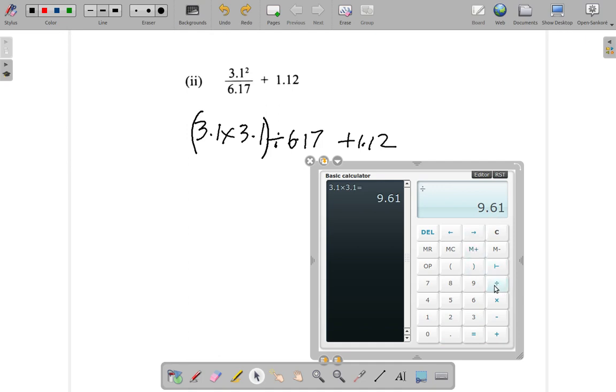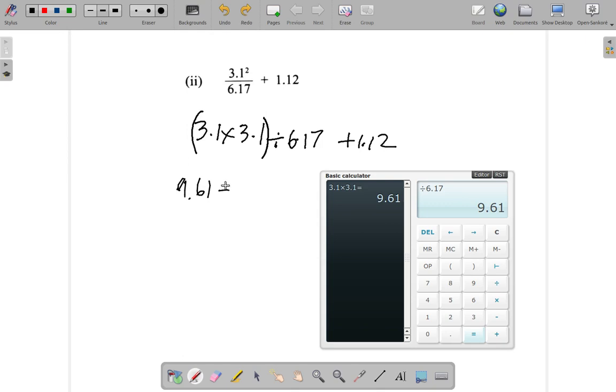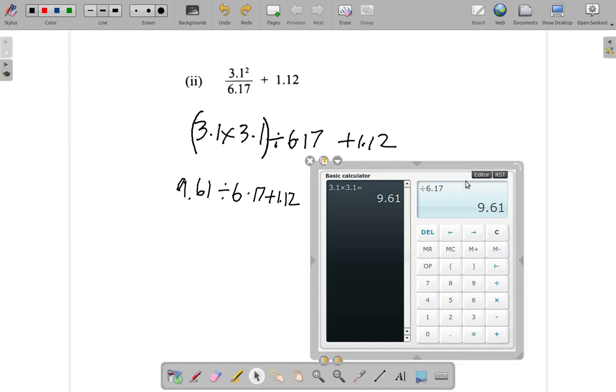Then that divided by 6.17. So so far I have 9.61 divided by 6.17 plus 1.12. Now, as for the 9.61, have it divided by 6.17. Why does it give me an error? 9.61 over 6.17...